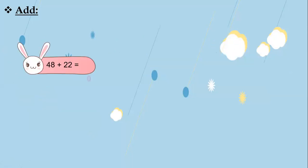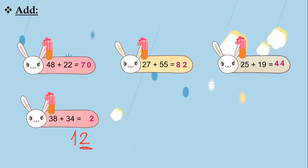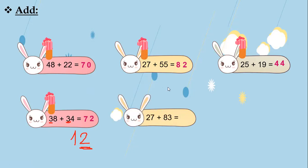The next question: 38 plus 34. 8 plus 4 — 8 in my mind and 4 on my fingers. After 8: 9, 10, 11, 12. I will write only 2 and carry up 1. Now 1 plus 3 plus 3: do you remember doubles? 3 plus 3 are doubles — the result equals 6. Then 6 plus 1 equals 7. So 38 plus 34 equals 72.